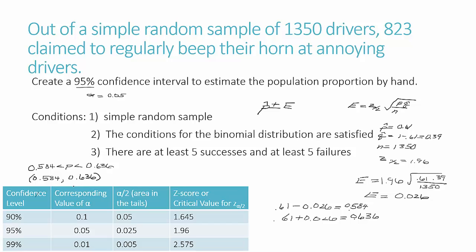When I state my answer as a sentence, I would say: I am 95% confident that the true population proportion of drivers who beep their horn at annoying drivers is between 0.584 and 0.636. We're using p here as the true population proportion, and these inequality symbols say the true population proportion is somewhere in this range.